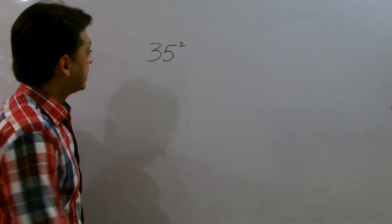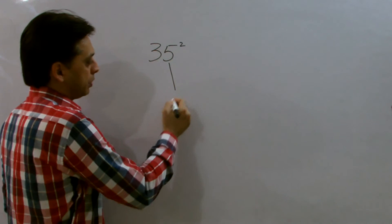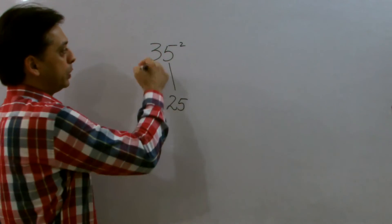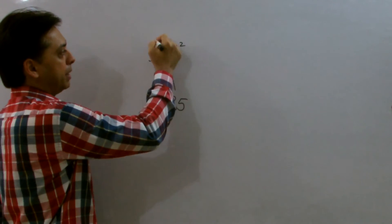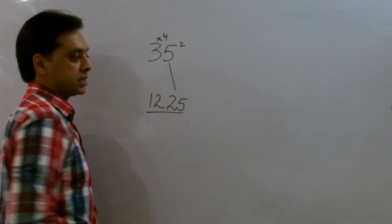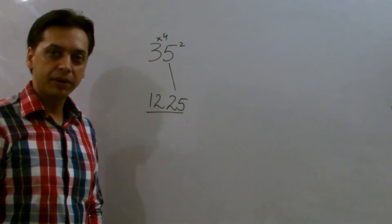Now, how it works? Simply take the square of this number, which is 25, and multiply the adjacent number with the next consecutive number. I mean, multiply this 3 by 4, you get 12. And that's your answer: 1225.